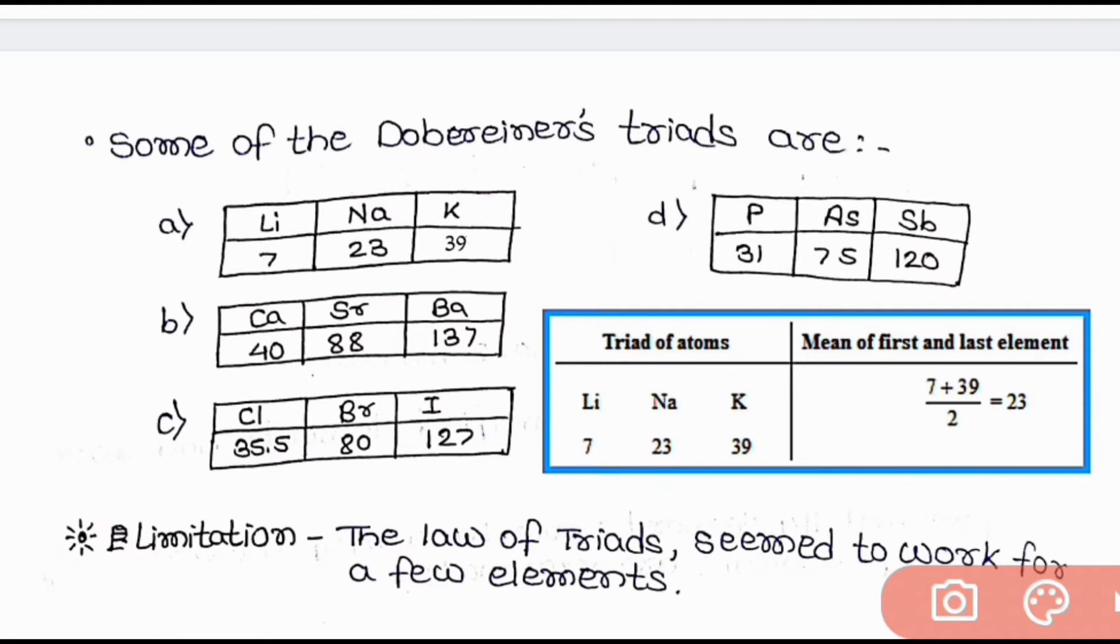And similarly, you can see the other Döbereiner's Triads such as calcium, strontium and barium, chlorine, bromine and iodine and potassium, arsenic and antimony.